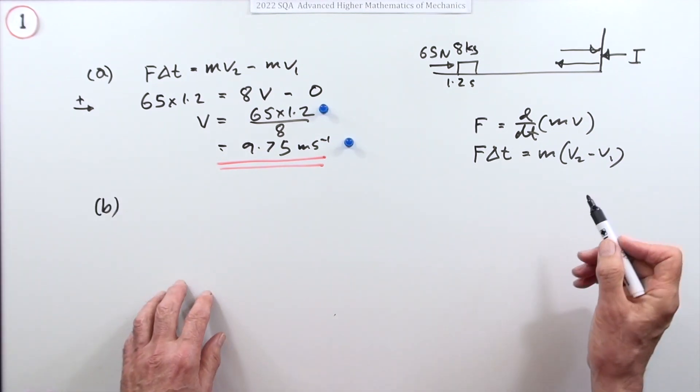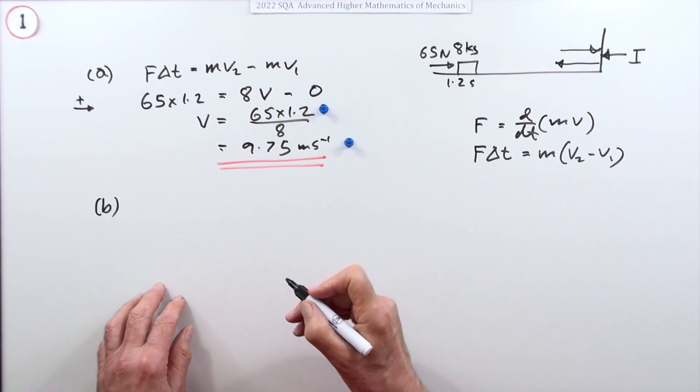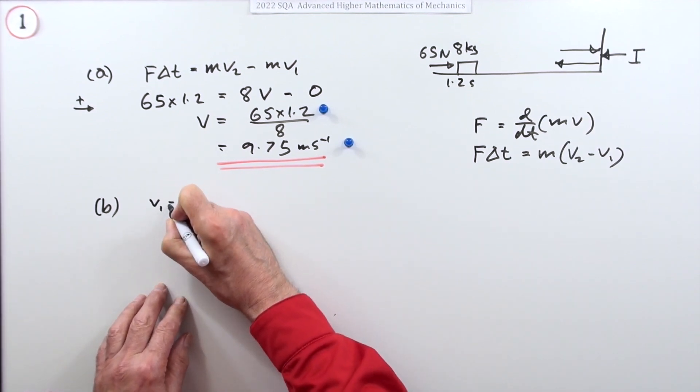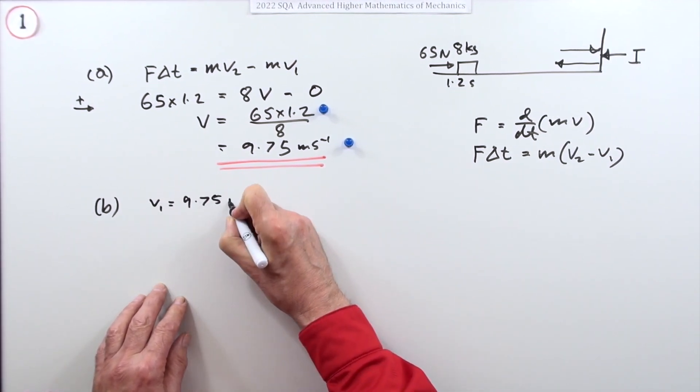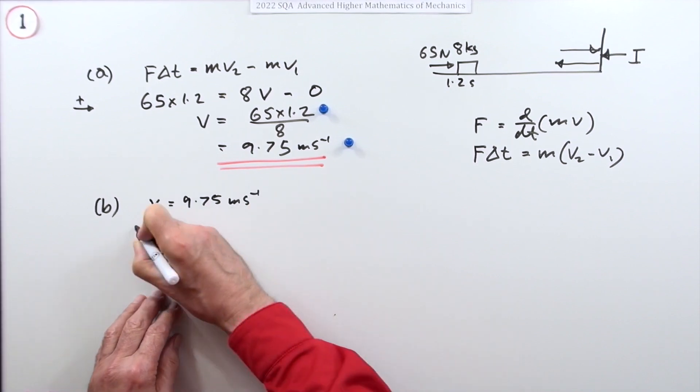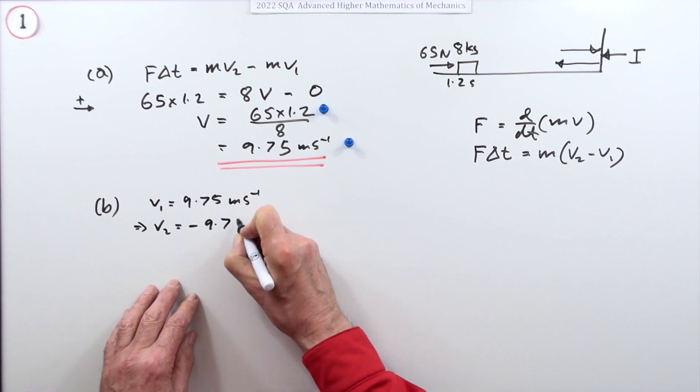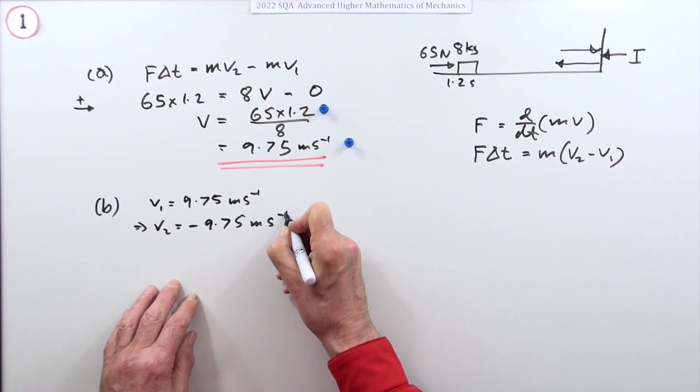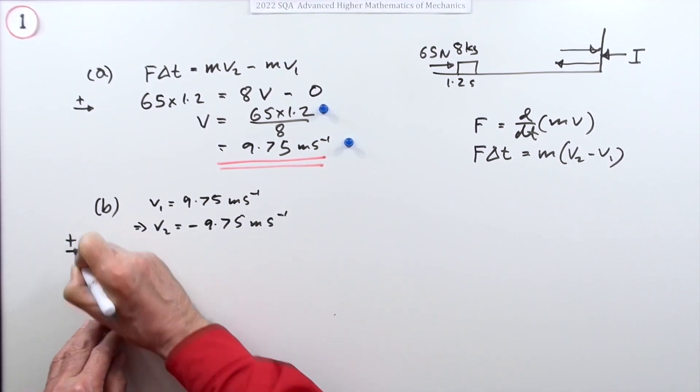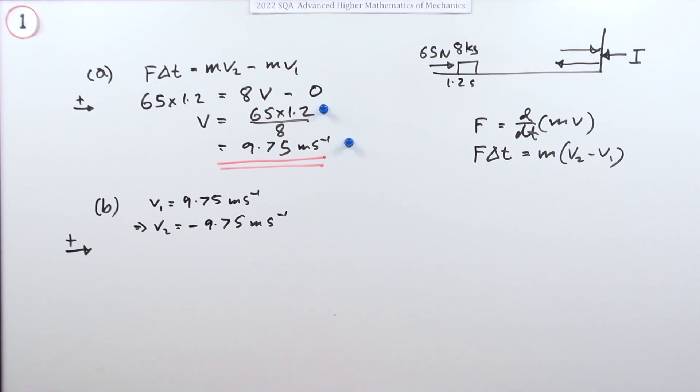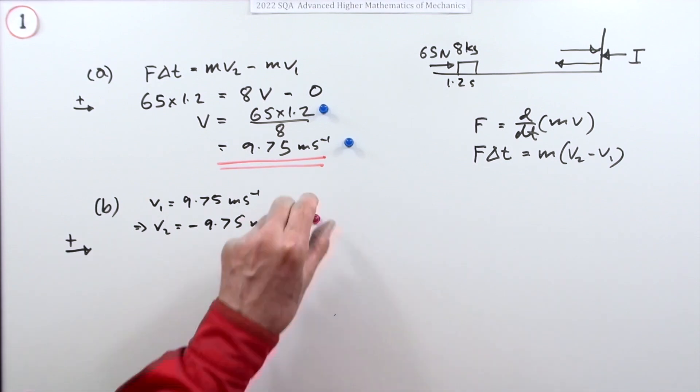Well, I think the first thing for the two marks would be you have to state what the rebound speed was. So we had v1 was 9.75 meters per second, which means that v2 with no loss of energy will be negative 9.75 meters per second, just taking again the same direction as positive in the horizontal direction. And that is indeed worth a mark.